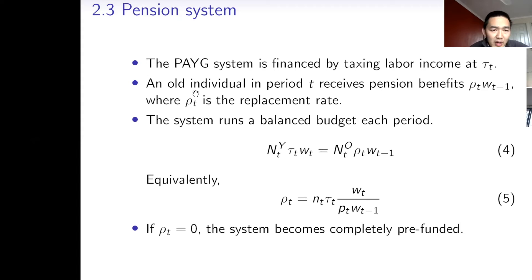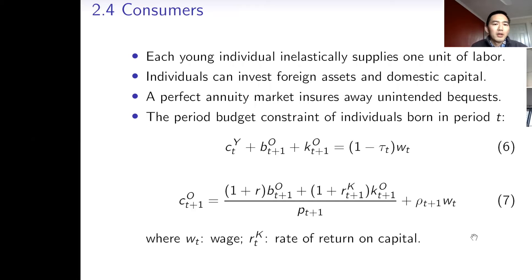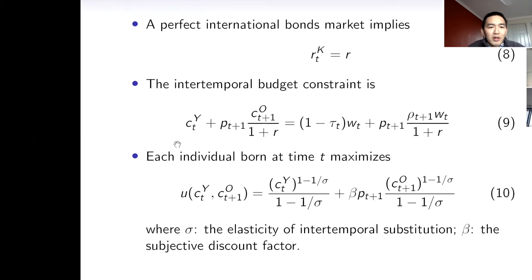There is a pay-as-you-go pension system financed by taxing labor income at tax rate τ_T. All individuals receive pension benefits based on the previous wage and the replacement rate ρ. The system runs a balanced budget each period, which links the tax rate and replacement rate. If the replacement rate is zero, the system becomes completely funded. Each young individual inelastically supplies one unit of labor. Individuals can invest in foreign assets and domestic capital. With a perfect annuity market, we can write down the period budget constraints for young and old generations and derive the intertemporal budget constraint.